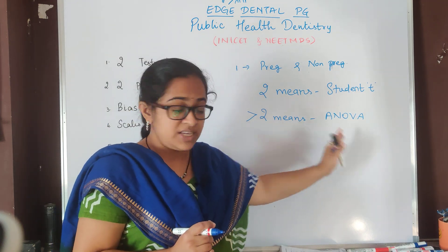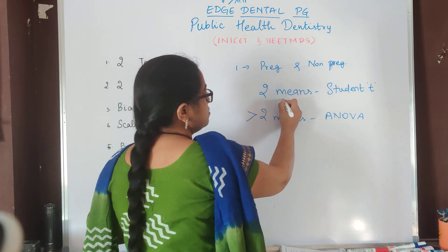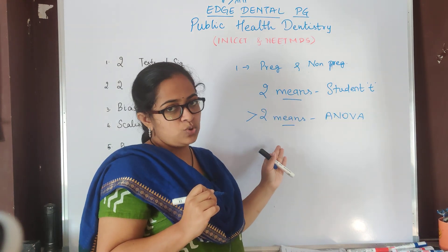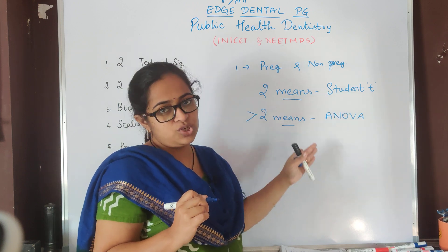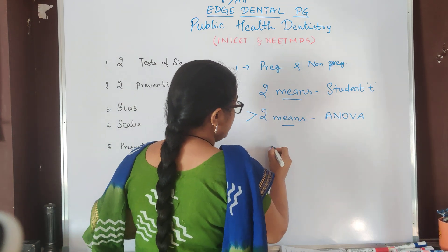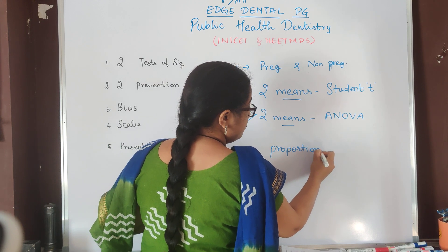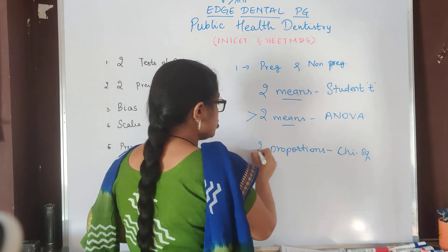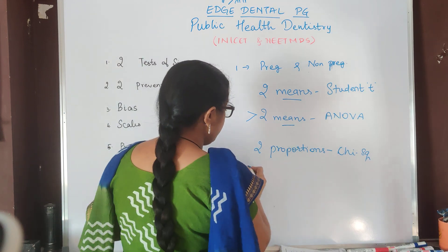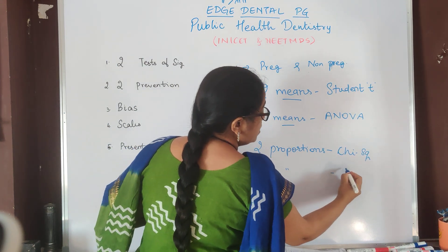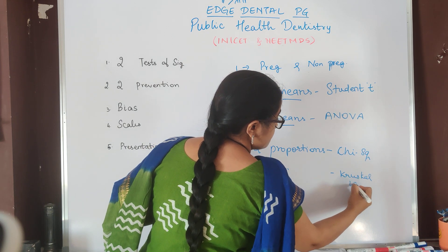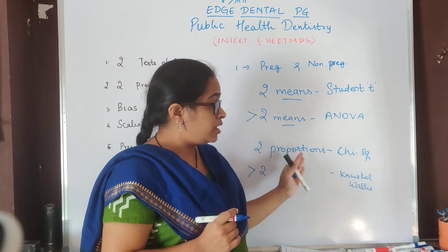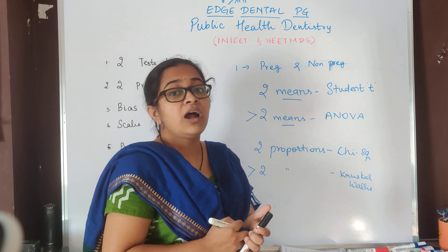ANOVA is the analysis of variance test. Whenever means is in question, it is Student T-test or ANOVA. Whenever means is in question, the data is going to be quantitative and hence parametric tests would be used. Whenever the question relates to proportions, the answer is going to be Chi-square. Whenever more than 2 proportions would be compared, it would be Kruskal-Wallis. There are many non-parametric tests, but these are the ones commonly asked at the undergraduate level.